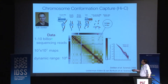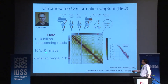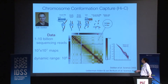A good experiment gives you about 10 billion such reads, enough to fill a map of 10^7 by 10^7 — a map of the whole human genome. It's a 2D representation of the 3D structure, essentially a map of contacts in space.